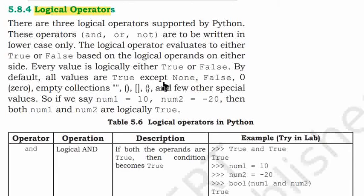Every value is logically either true or false. By default, all values are true except None, False, zero, empty collections like empty string, empty parenthesis, empty square bracket, empty curly bracket, and few other special values. So if we say num1 equals 10, num2 equals minus 20, then both num1 and num2 are logically true.